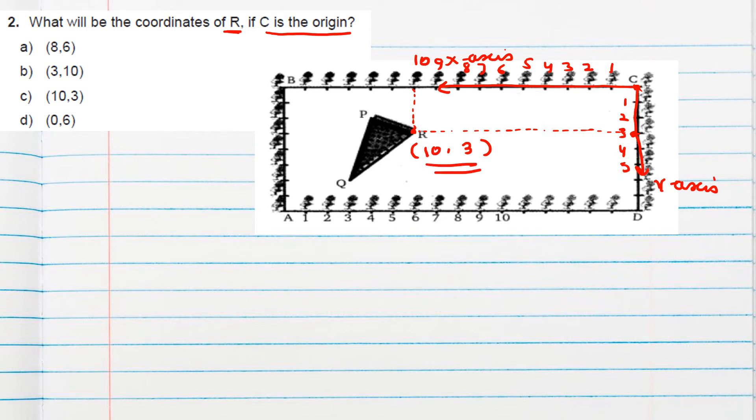Okay, C is the origin. So 10 comma 3. So 10 comma 3 will be the coordinate of R. 10 comma 3 is in option C. Option C is correct option.